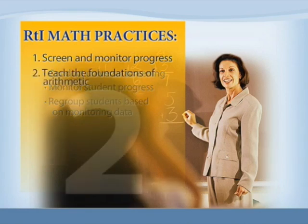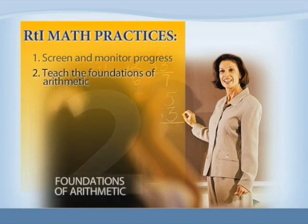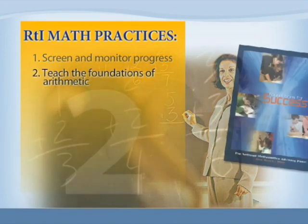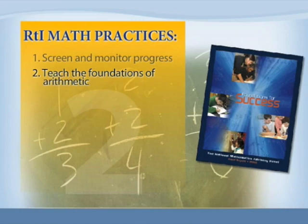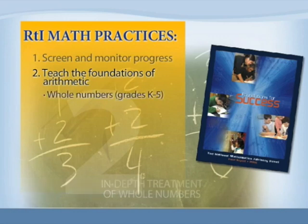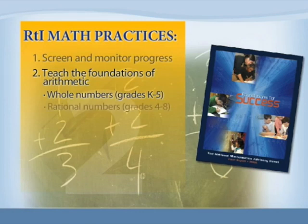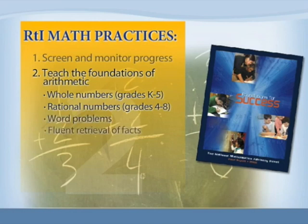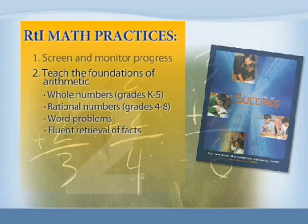RTI mathematics interventions teach the foundations of arithmetic, as recommended in the 2008 National Mathematics Advisory Panel Report. Tier 2 and Tier 3 interventions should focus intensely on in-depth treatment of whole numbers in kindergarten through grade 5 and on rational numbers in grades 4 through 8. Also important is explicit instruction in solving word problems and building fluent retrieval of basic arithmetic facts.